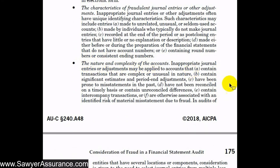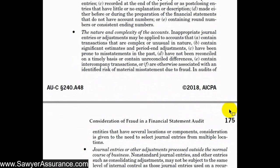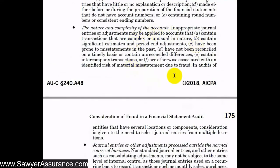We might also consider the nature and complexity of entries when selecting which ones to test. This includes journal entries that contain complex or unusual transactions, those containing significant estimates and period-end adjustments, those that have been prone to misstatements in the past, those not reconciled on a timely basis or containing unreconciled differences, those with intercompany transactions, or those otherwise associated with identified risks of material misstatement due to fraud. These types of accounts tend to be more complex and more prone to errors or fraud.